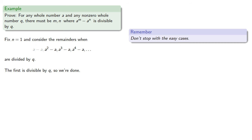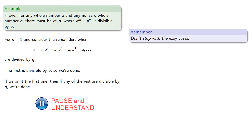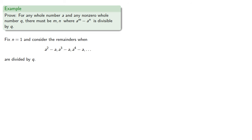And if we omit the first one, then if any of the rest are divisible by q, we're done. Well those were the easy cases, so if none of these are divisible by q, then at least two will have the same remainder.